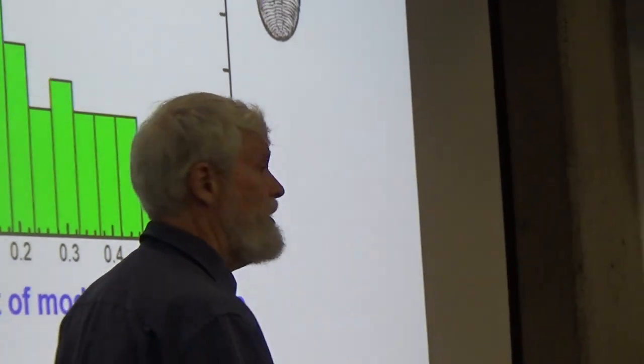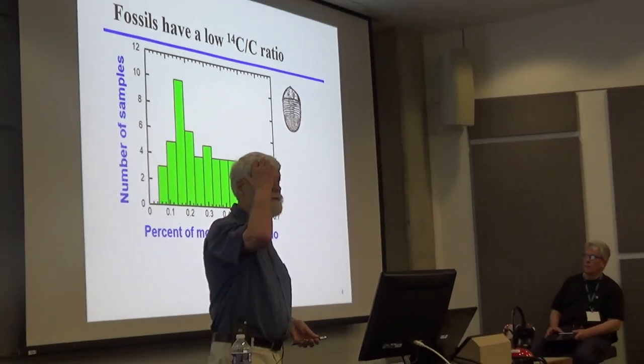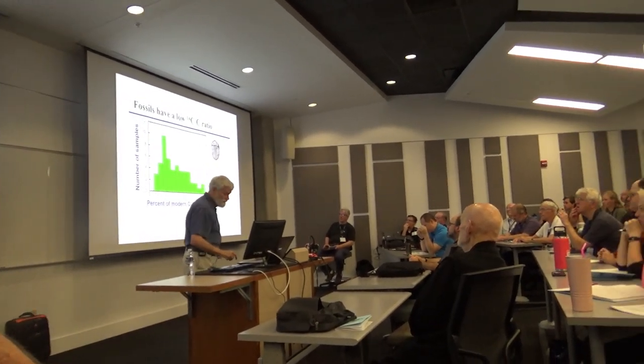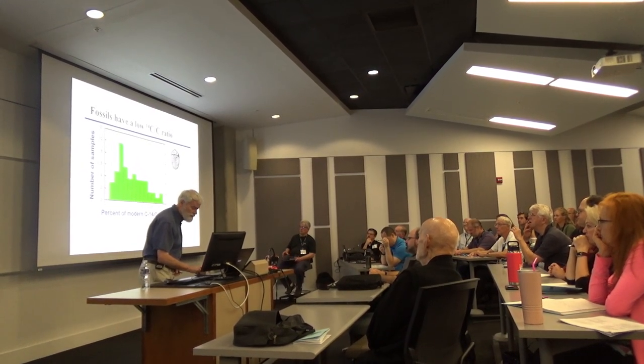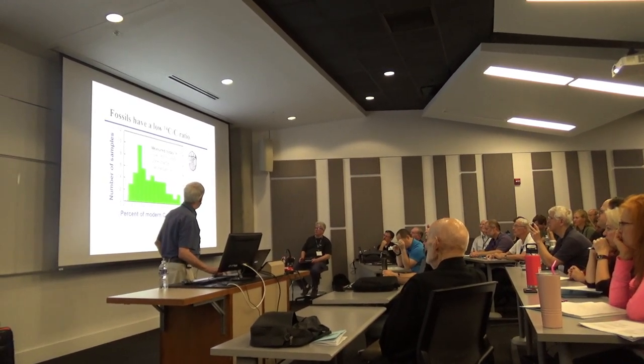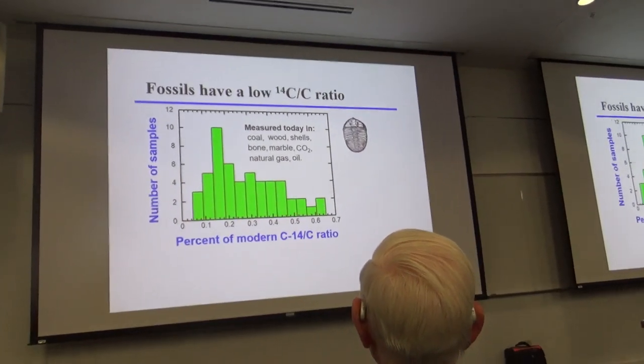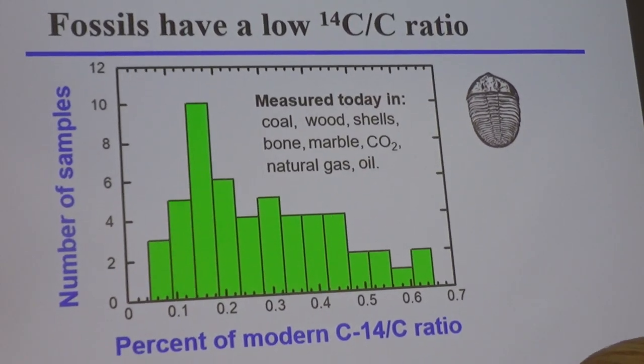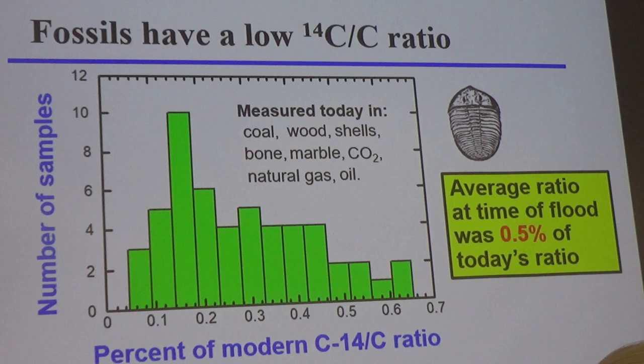And these things were buried in the flood about 4,500 years ago, according to the Hebrew chronology of the Bible original gaps. So what was it then? You have to multiply by 1.7 to get, so it's measured in all sorts of things, coal and wood and shells, bone, marble, CO2, natural gas, and oil. But as I said, you have to multiply by 1.7 to get the average ratio back then. So it turns out it was about half a percent of today's ratio.